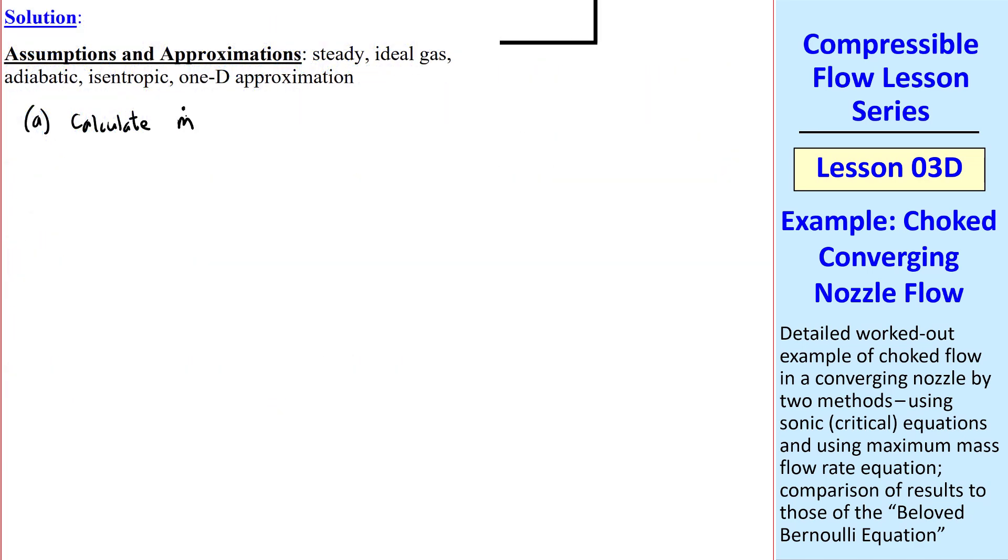Part A, calculate m dot. Well since the flow is choked, m dot equals m dot max. And recall from a previous lesson that for an ideal gas under these conditions, m dot max is P naught A star, square root of gamma over RT naught, gamma plus 1 over 2, all raised to the negative gamma plus 1 over 2 gamma minus 1. Here A star is equal to AE, again since the flow is choked. In other words, there are sonic conditions at the exit plane.